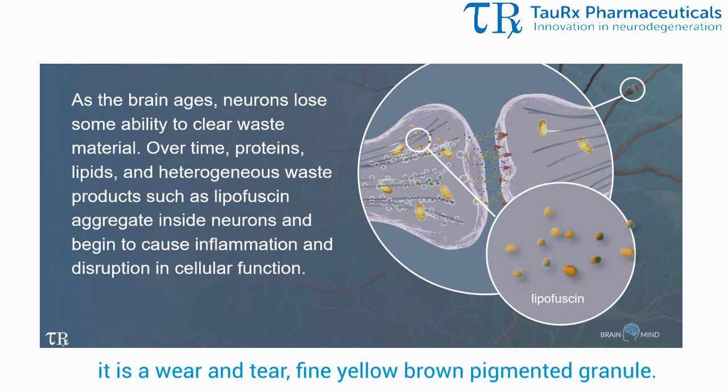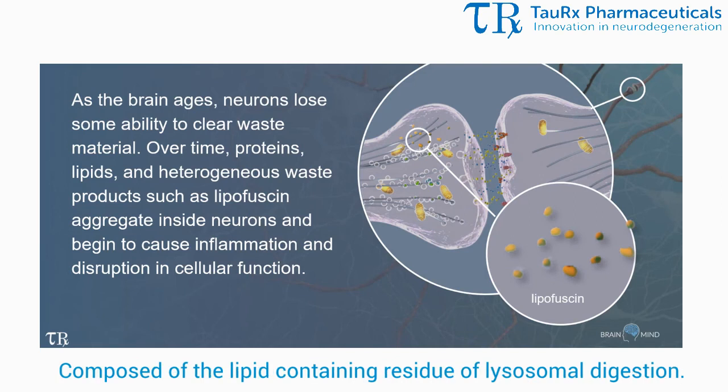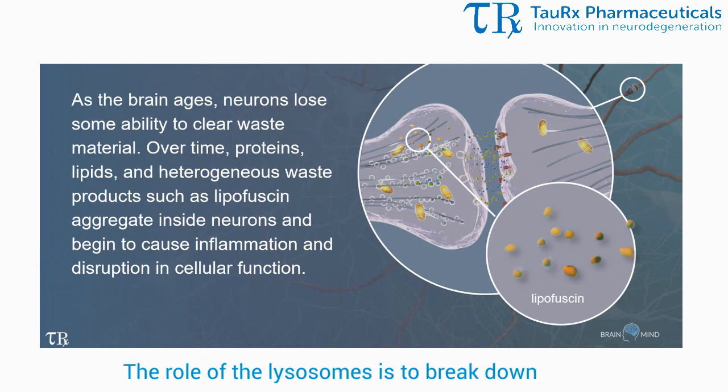One of the products that builds up is called lipofusyn. It is a wear and tear fine yellow-brown pigmented granule composed of the lipid-containing residue of lysosomal digestion. The role of the lysosomes is to break down excess or worn-out cell proteins.